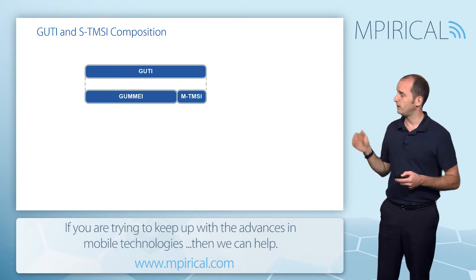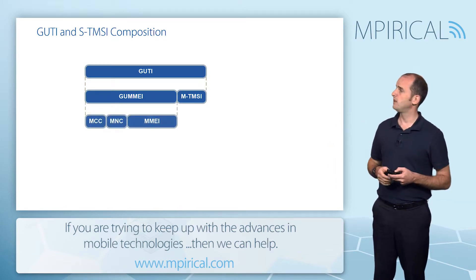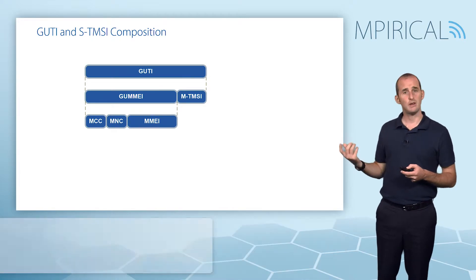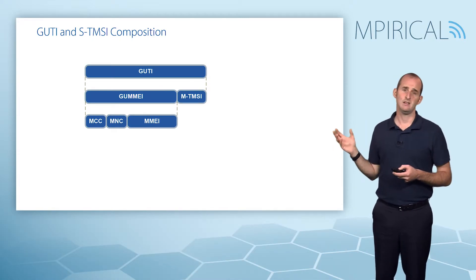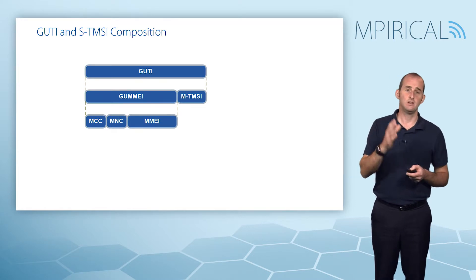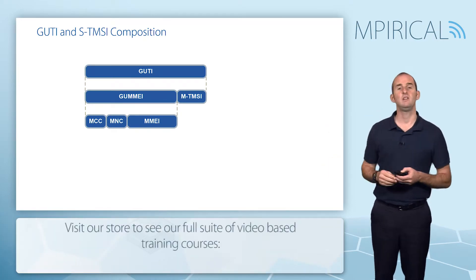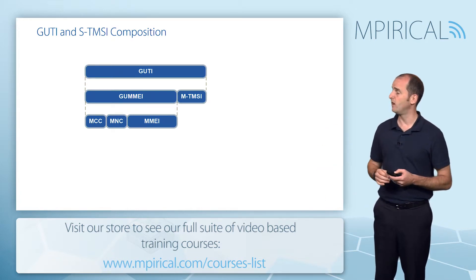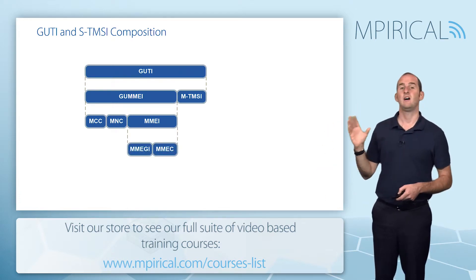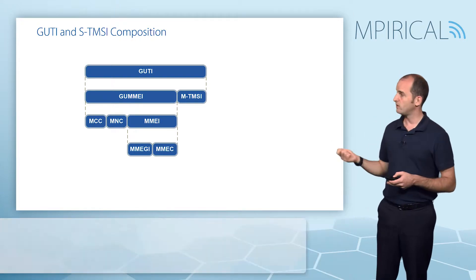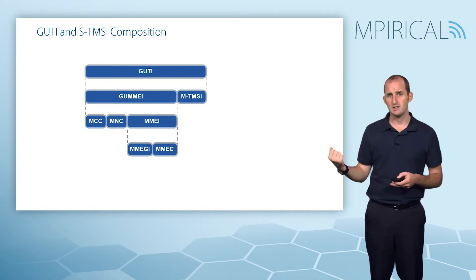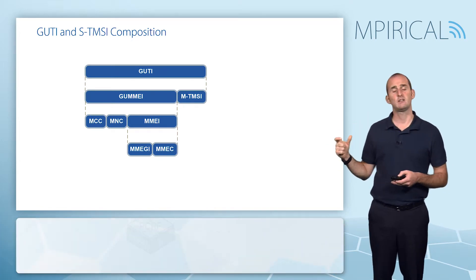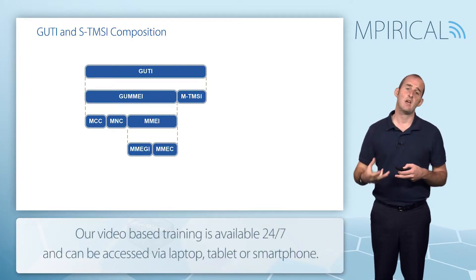We can break this down further. The Globally Unique MME ID is comprised of a mobile country code, mobile network code, and MME ID — so by that rationale, every MME in the world has a unique identity. Going even further, the MME identity can be broken down into an MME group ID and an MME code, and the reason for this breakdown is to facilitate MME pooling.